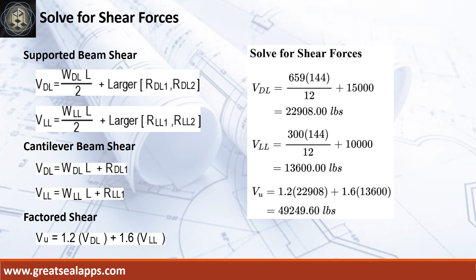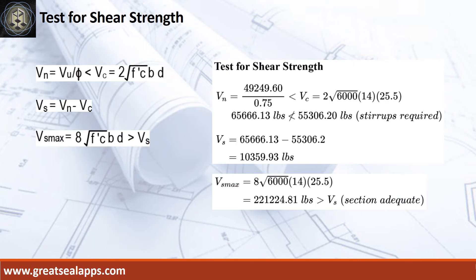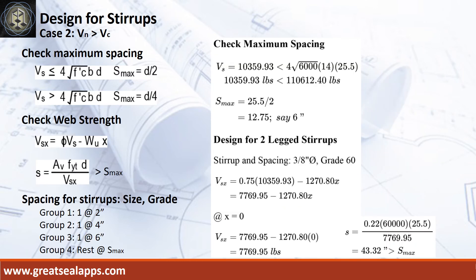The shear force for dead load is 22,908 pounds and live load is 13,600 pounds, for a maximum shear force of 49,249.6 pounds. The nominal shear force is 65,666.13 pounds, greater than the concrete capacity of 55,306.2 pounds. The shear force capacity of the stirrup is 10,359.93 pounds, less than the maximum stirrup capacity of 221,224.81 pounds. Maximum spacing is 6 inches. The shear force at face of support is 7,769.95 pounds, with initial spacing at 43.32 inches.